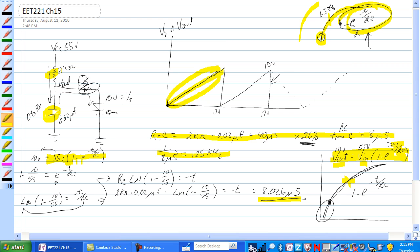That's a natural log function. So if you take the ln of both sides, we've got ln of 1 minus 10 over 55 is equal to minus t over RC.